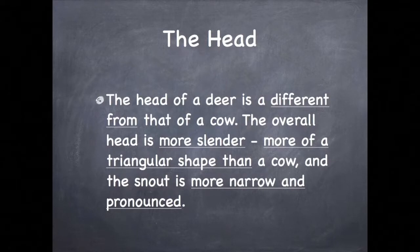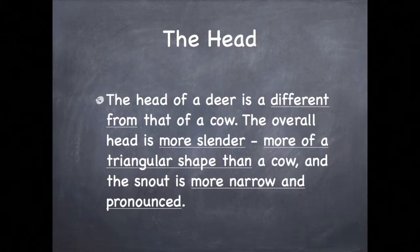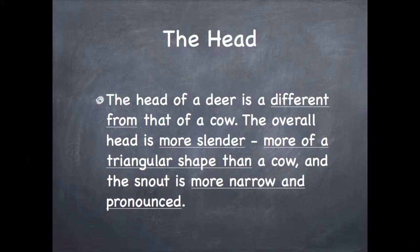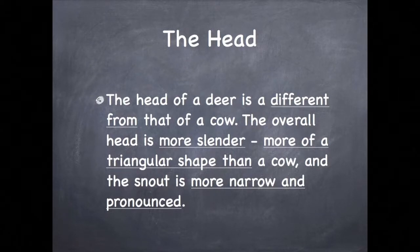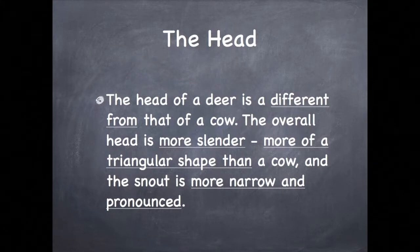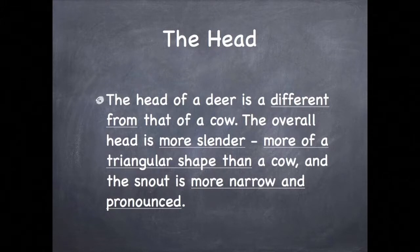Deer are seldom confused with cows because their head is so different, so this is an important distinction to make. Remember, we're using our words to form a picture in the mind of the listener or reader. The head of a deer is different from that of a cow — the overall head is more slender, more of a triangular shape than a cow's, and the snout is more narrow and pronounced.